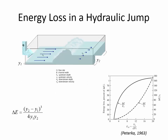Just to review, when we were talking about energy loss last time, this is the formula we can use to find the amount of energy that's lost. The units of delta E are meters or feet depending on your unit system. You can calculate the total energy in the flow at location one by adding the depth and the velocity head together. Delta E is how much is lost in the transition from one to two. There is a pretty big change in the amount of energy loss as a function of the Froude number.